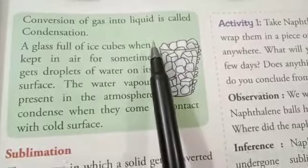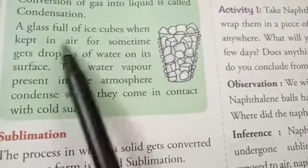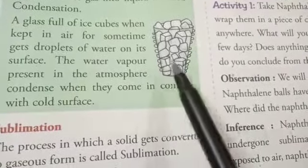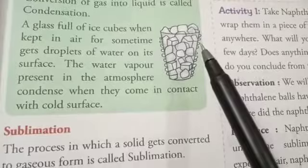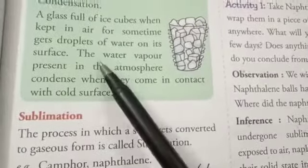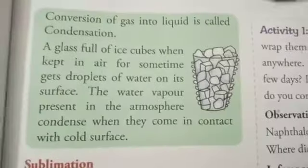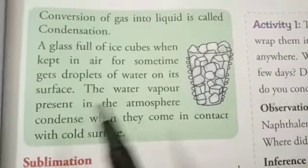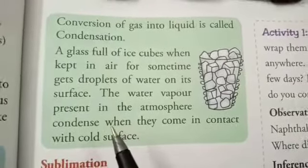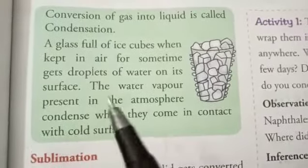Conversion of gas into liquid is called condensation. When we change the gas into liquid, what do we say? Condensation. A glass full of ice cubes, when kept in air for some time, gets droplets of water on its surface. The water vapor present in the atmosphere condenses when it comes in contact with the cold surface of the glass — that's why we see water droplets on the side of the glass.